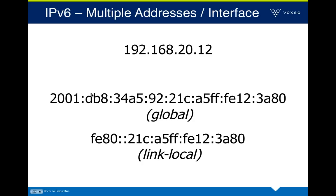Another fundamental difference: in IPv6, you'll have multiple IPv6 addresses per interface. In IPv4, you only have one IP address per interface. In IPv6, you'll have at least two: a link-local address and then a global address if you have global IPv6 connectivity. This gets into the question of how applications know which address to bind to — a different concept in IPv6.